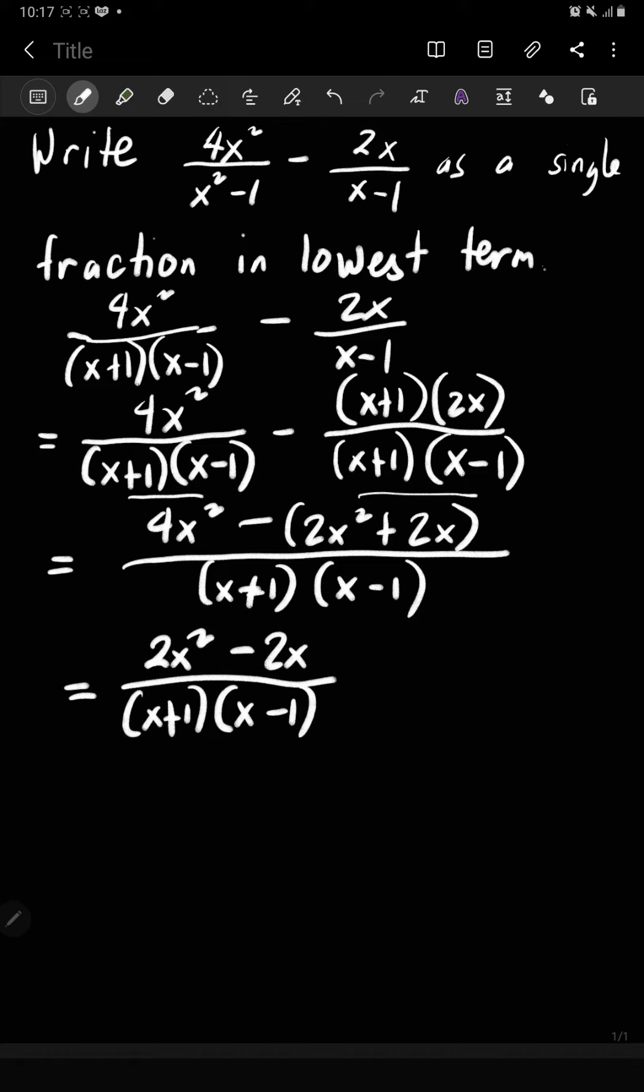So 2x² minus 2x, their common factor is 2x. You divide each term by that 2x. So 2x² divided by 2x, that is just x. Negative 2x divided by 2x, that's negative 1.